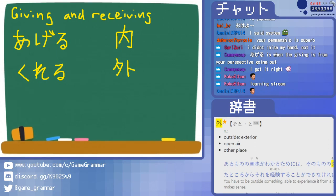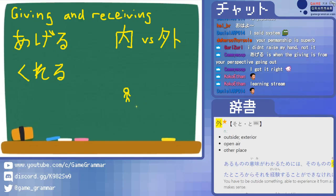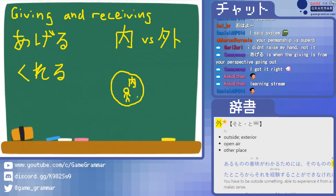Now we know the two words uchi and soto — how does that help us? The whole point of generalizing ageru and kureru is understanding these concepts. Imagine you're here, in the center. Around you exist circles of familiarity. You yourself in the center is the most uchi you can get — this is just you, the highest level of familiarity.